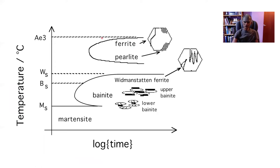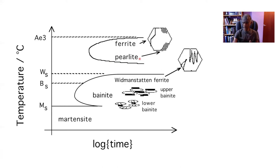In our time-temperature transformation diagram, which consists of two C curves, the upper one represents the pearlite transformation and the lower one the displacive transformations. Pearlite is a reconstructive transformation where diffusion is necessary, and a certain amount of carbon is necessary inside your steel in order to obtain pearlite.